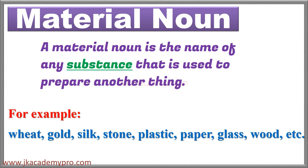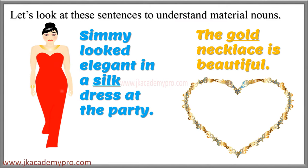Material noun. A material noun is a name of any substance that is used to prepare another thing. When we use anything to make another thing, it is called a material noun. For example: wheat, gold, silk, stone, plastic, paper, glass, wood, etc. 'Simi looked elegant in a silk dress at the party.' Here, silk is a material noun since silk is a material used to make the dress. 'The gold necklace is beautiful.' Here, gold is a metal used to make the necklace, so gold is a material noun.